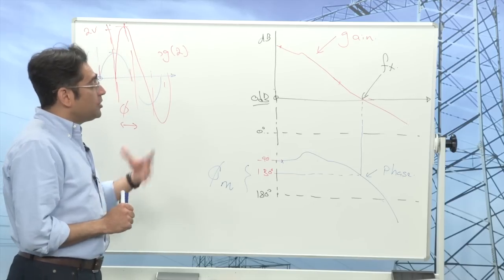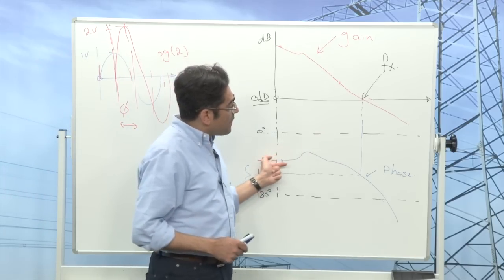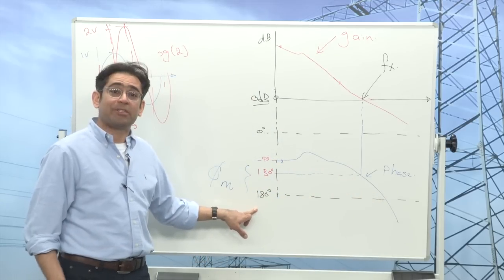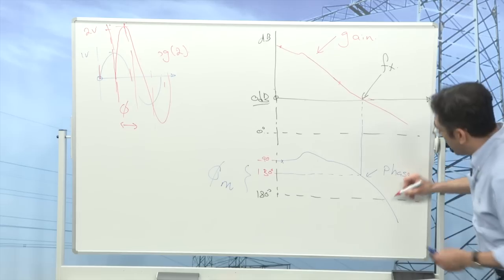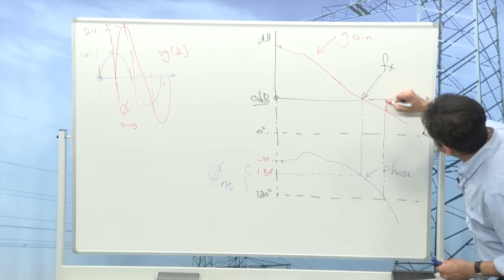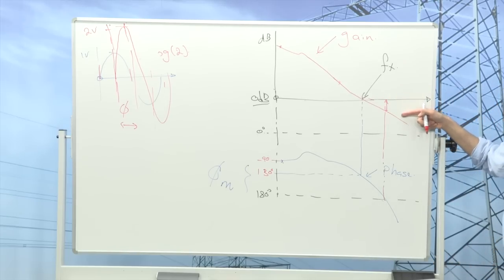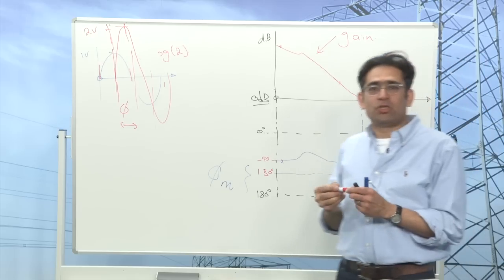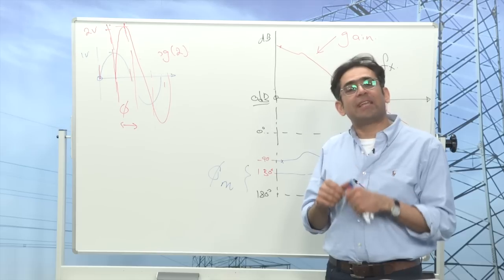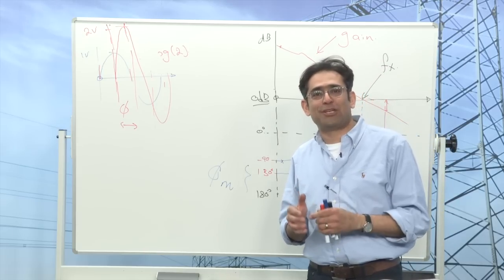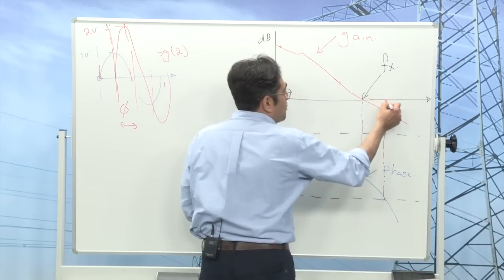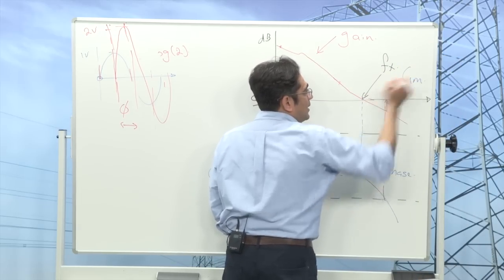Then I will need to look at something else. As my phase deteriorates, at some point it hits the 180 degree point. At this point I draw a line back up to my gain plot and I see how much below the 0 dB axis it is. So the amount that is below the 0 dB axis is called the gain margin, and of course that again is a measure of the relative stability of my power supply. So this point here I call the gain margin.